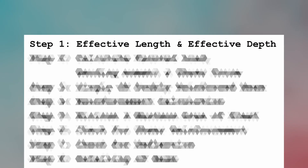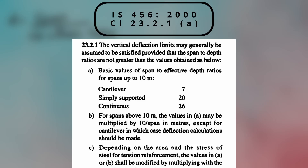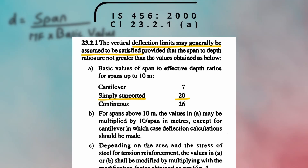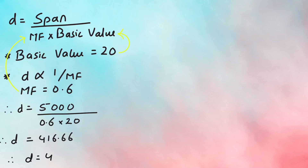Step 1 is to find the effective length and effective depth of the beam. Effective length is found using the formula as per Clause 23.2.1a. Assuming the beam is simply supported, we take the basic value as 20. MF is the modification factor — a multiplier for the basic value inversely proportional to the depth. We will take a value of 0.6. Substituting these values: D equals 5000 divided by 0.6 into 20, giving an effective depth of 420 mm.